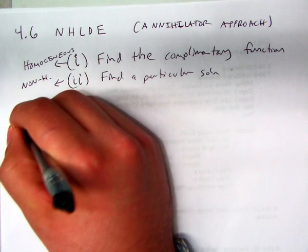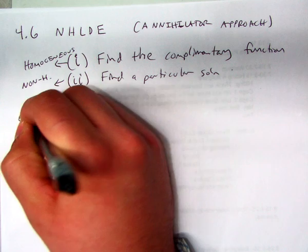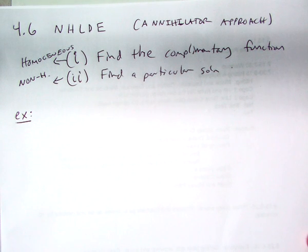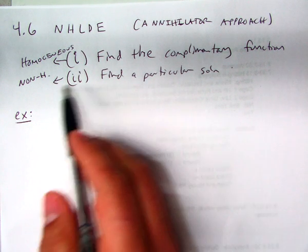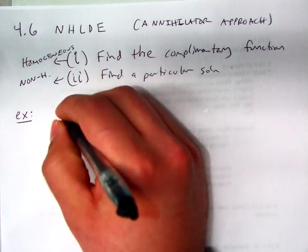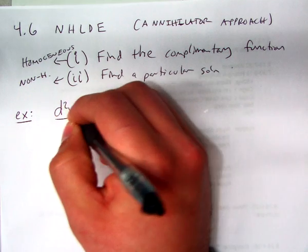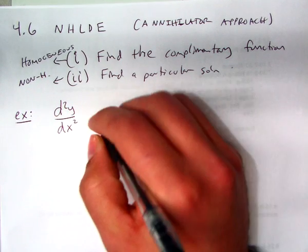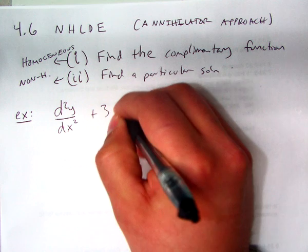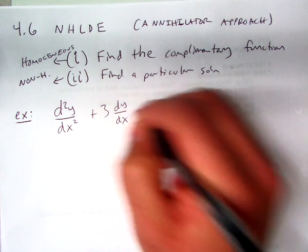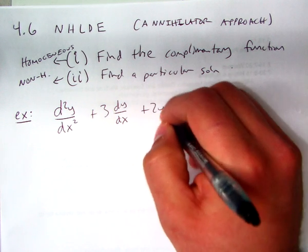First example. We're basically going to go through these two steps. So let's say we have d squared y over dx squared plus 3 times dy dx plus 2y equal to 4x squared.